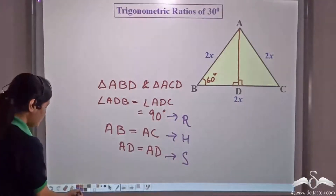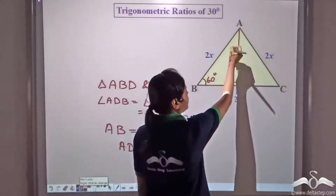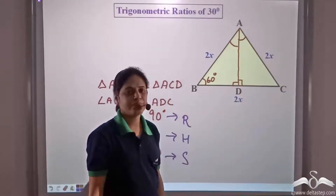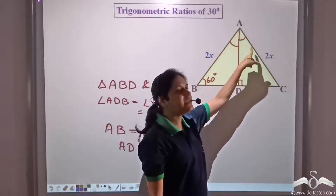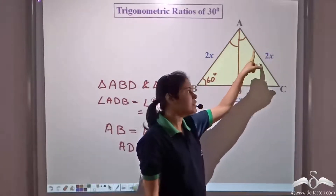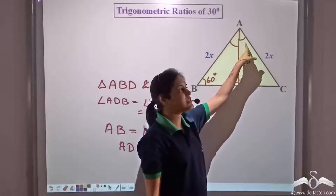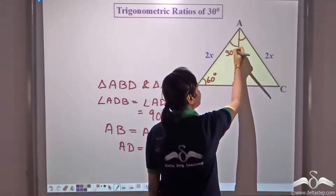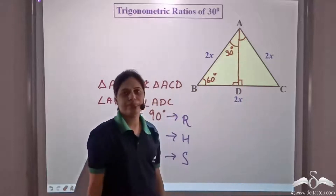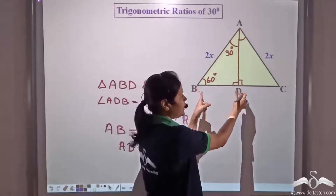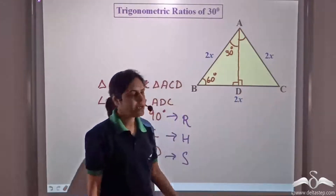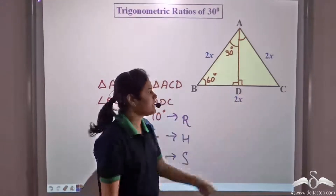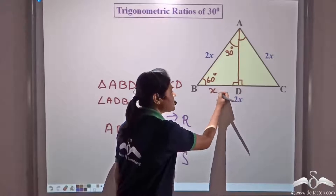This means angle ABD equals angle ACD. Since the entire angle at B was 60 degree, and both halves are equal, each half is 30 degree. Also, BD equals DC. Since BC equals 2x and BD equals DC, BD equals x.